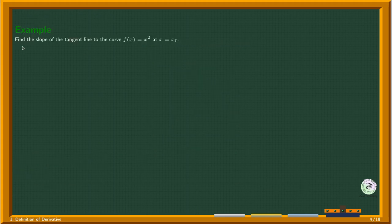Let's do an example. Find the slope of the tangent line—that means also the derivative—to the function f(x) = x² at point x = x₀.